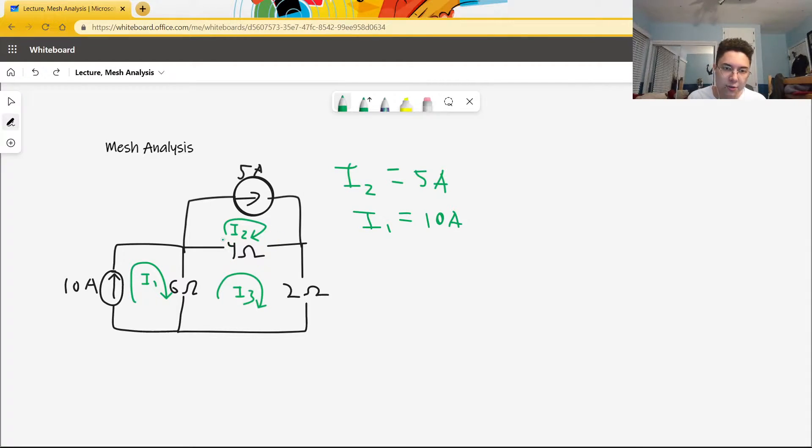Now, this doesn't mean that the current through the 4 ohm resistor is 5 amps. It just means that part of the current through the resistor is 5 amps in the left direction. I3 also contributes some current to the 4 ohms in the opposite, probably the opposite direction. To determine what I3 is, it's time to use KVL.